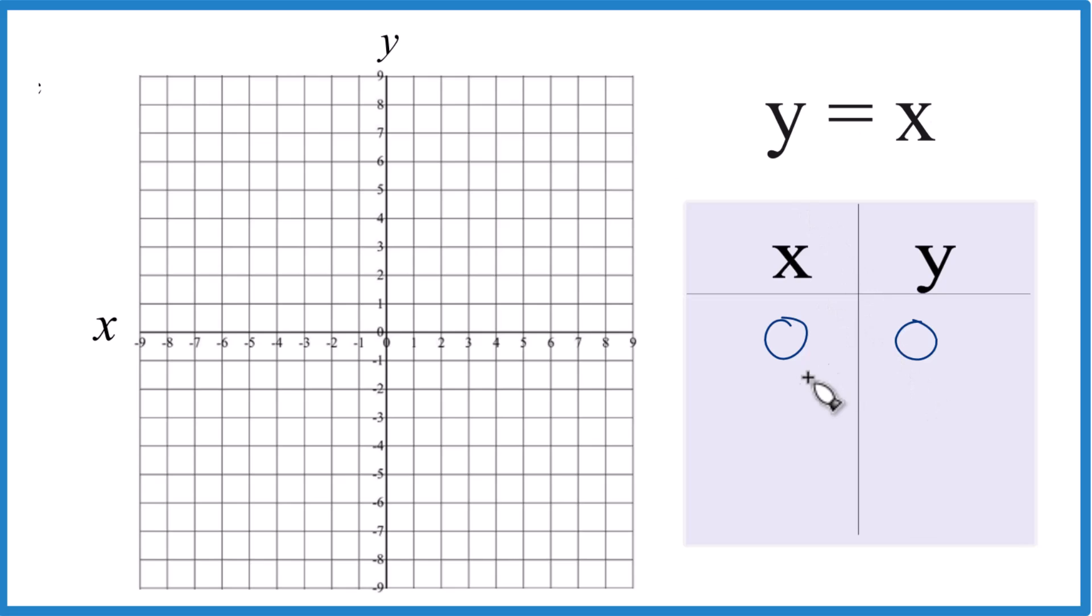That's our first point. Let's go with negative 1. If x is negative 1, well, y is negative 1. And if x is positive 1, y is positive 1. So whatever value you have for x is going to be the same for y.